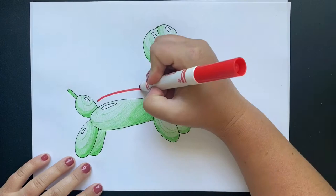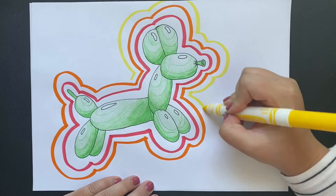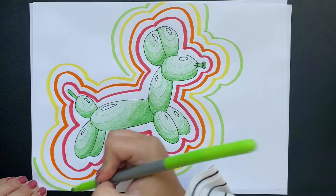Now for the background, I want us to stick with pop art. We want to use bright colors, bright patterns. You can create any type of design that you want behind your balloon animal dog. It's completely up to you what lines, shapes, and colors you use.